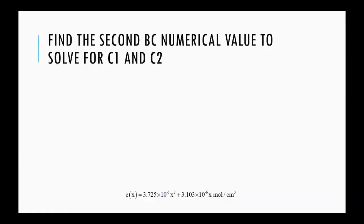So now, we have to find the second boundary condition, numerical value. Otherwise, we cannot find c1 and c2 because to find them, we need two numerical values at the two boundaries.